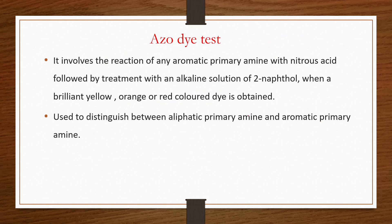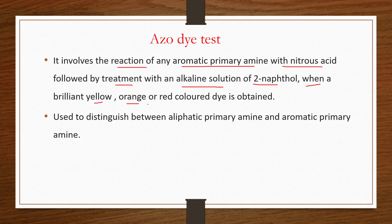The azo dye test involves the reaction of an aromatic primary amine with nitrous acid, followed by treatment with an alkaline solution of 2-naphthol (beta-naphthol), yielding a brilliant yellow, orange, or red colored dye. This test distinguishes between aliphatic and aromatic primary amines — aromatic primary amines give the azo dye test while aliphatic primary amines do not.